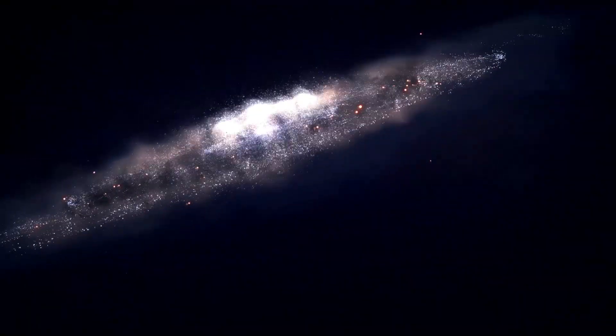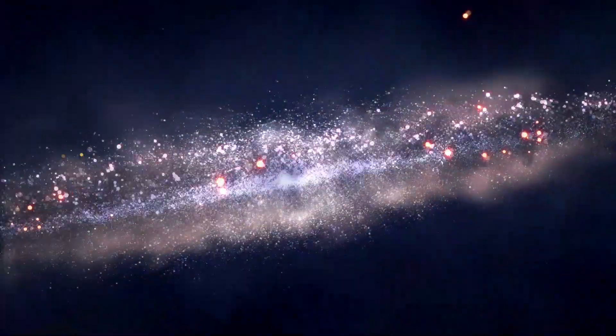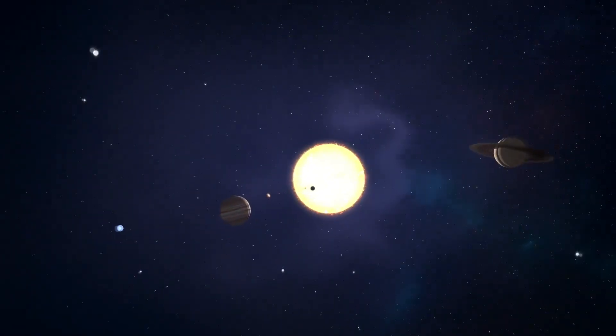So what did they find? That two-thirds of the spiral galaxies measured rotated in the opposite direction as the Milky Way.